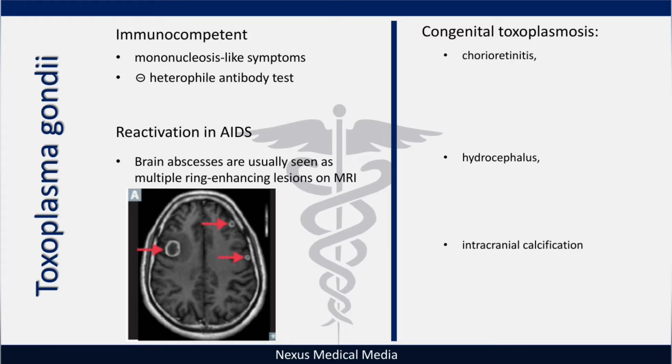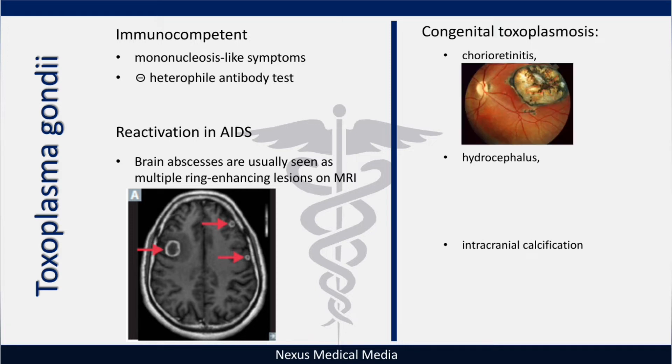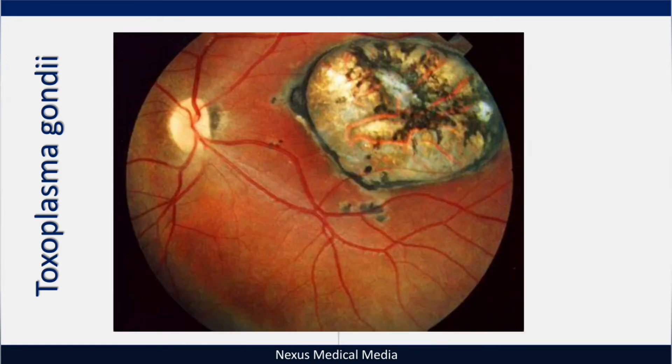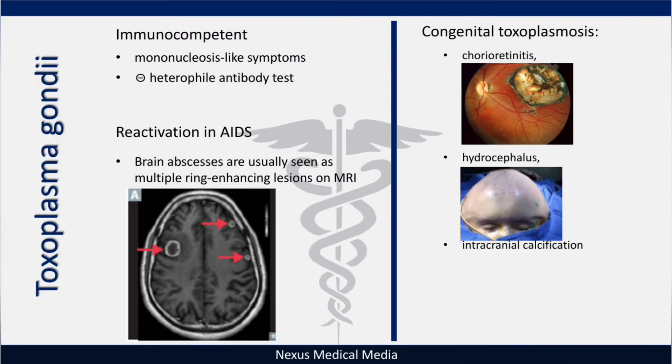Starting with chorioretinitis — let me zoom in — that is chorioretinitis caused by Toxoplasma gondii. Next is hydrocephalus, which involves cerebrospinal fluid not flowing properly, like a blockage.